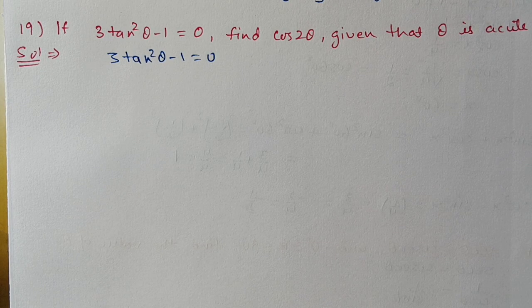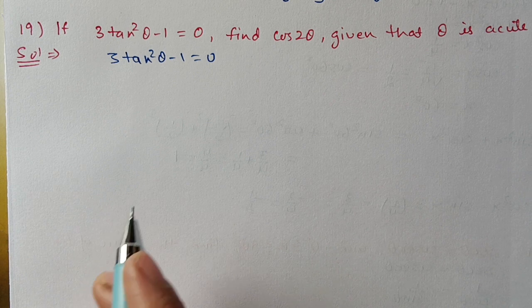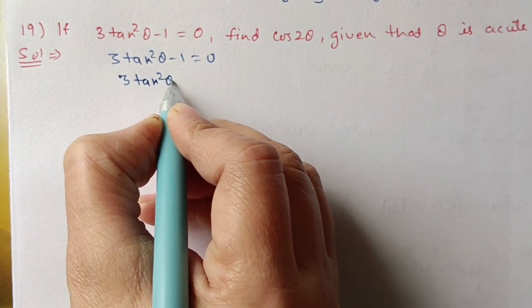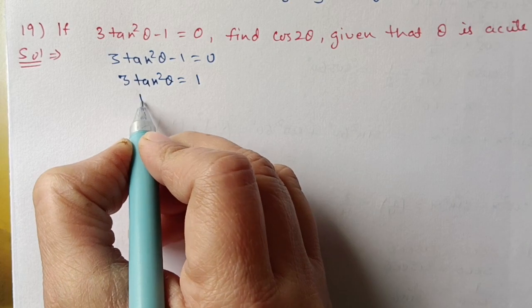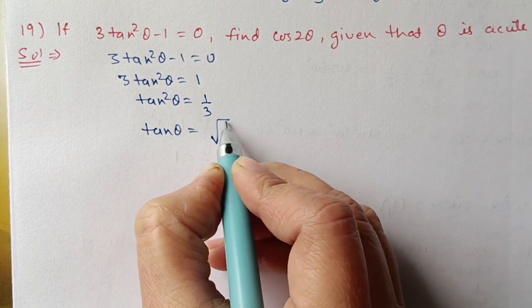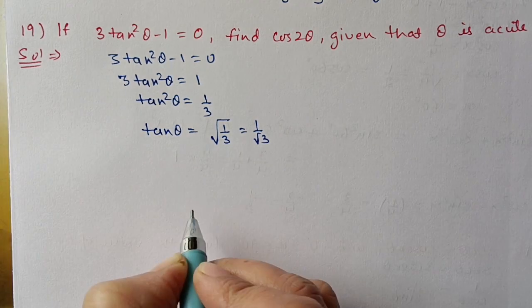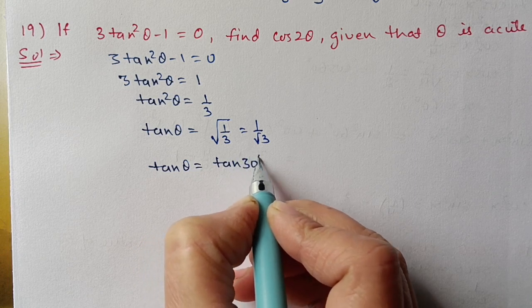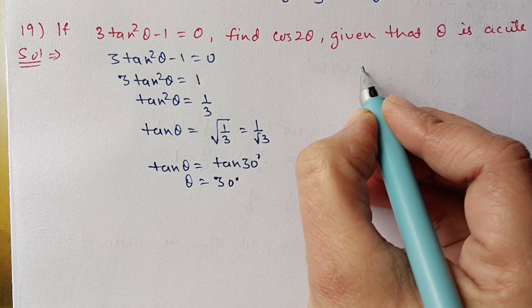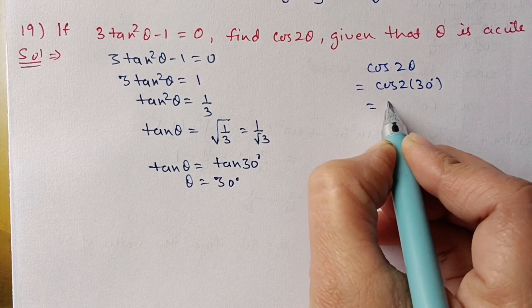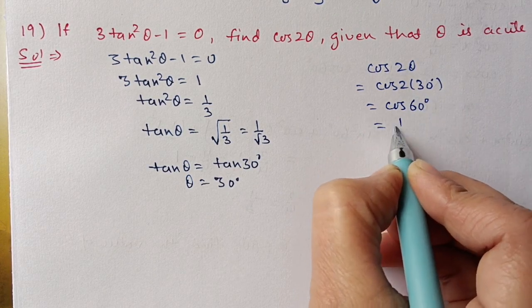Question 19: If 3 tan squared theta minus 1 equals 0 and theta is an acute angle, find cos 2 theta. From 3 tan squared theta minus 1 equals 0, shifting 1 to the other side and dividing by 3: tan squared theta equals 1 by 3, so tan theta equals 1 upon root 3. The value 1 upon root 3 is tan 30 degrees, so theta equals 30 degrees. Then cos 2 theta means cos 2 times 30, which is cos 60 degree, and cos 60 degree value is 1 by 2.